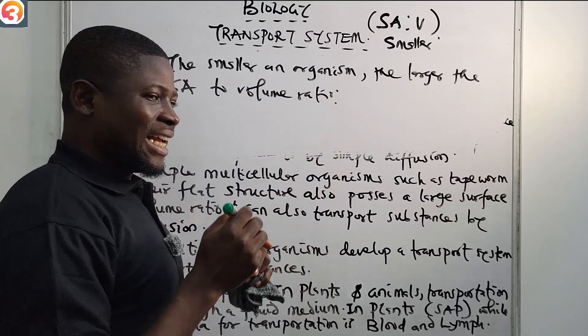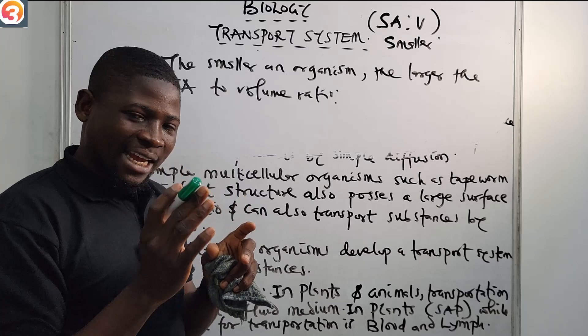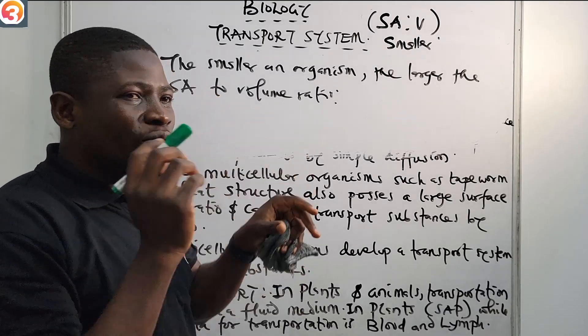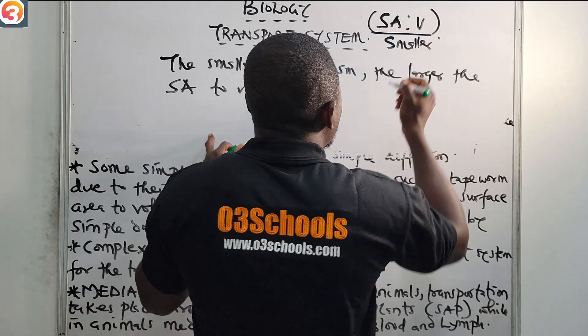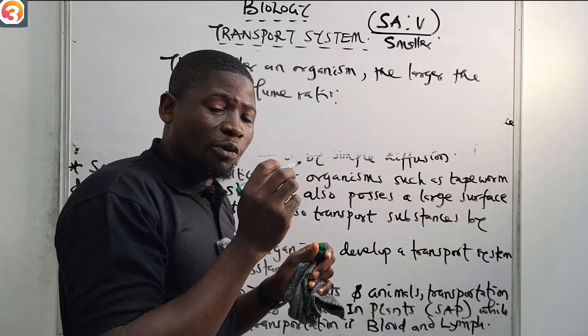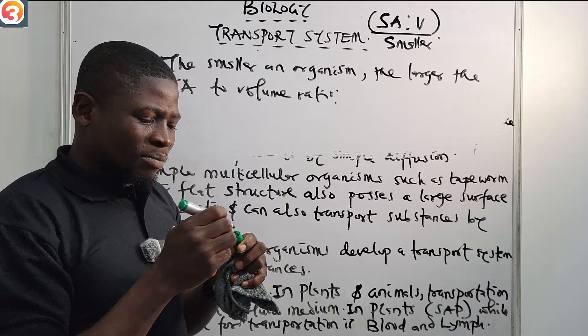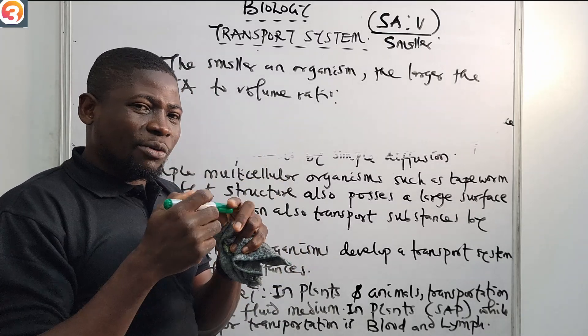As an organism increases in size, the surface area to volume ratio decreases. Because delivering nutrients and materials to the cells becomes less efficient as the size of the organism increases. So, if the organism is small, it will have a larger surface area to volume ratio. If the organism is large, it will have a smaller surface area to volume ratio.